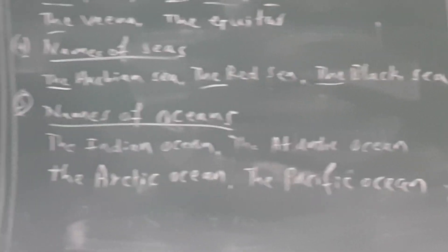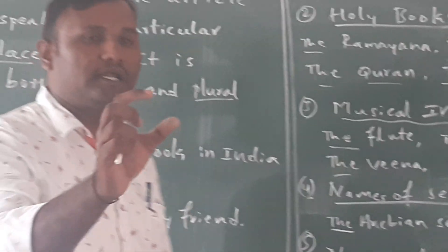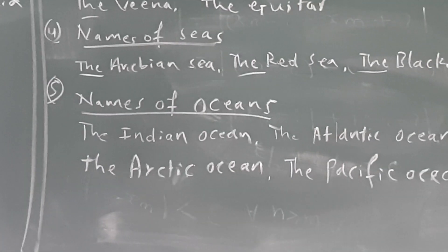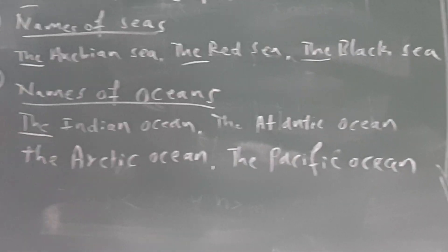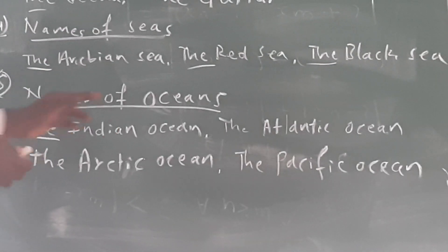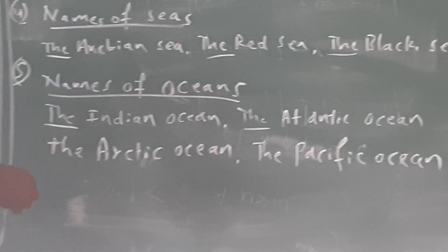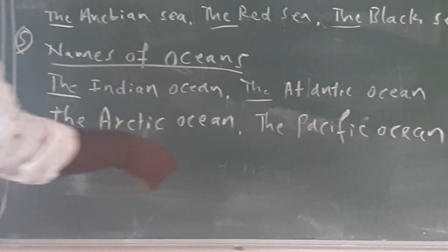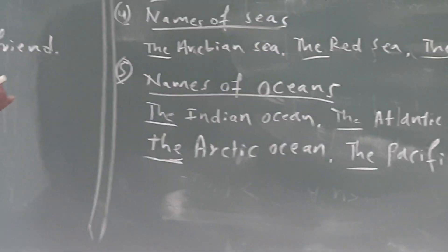Fifth rule: names of oceans. Before the names of oceans, we use the article 'the'. For example: the Indian Ocean, the Atlantic Ocean, the Pacific Ocean. These are names of oceans, so before them we use the article.